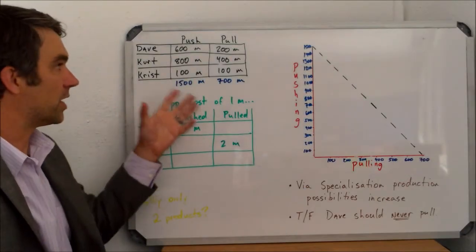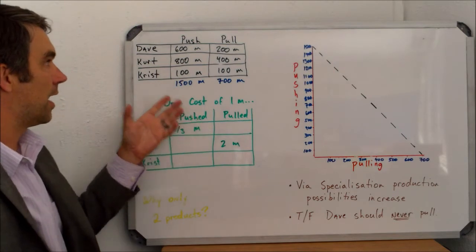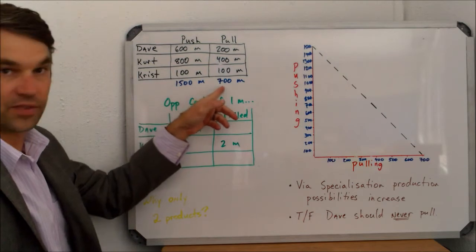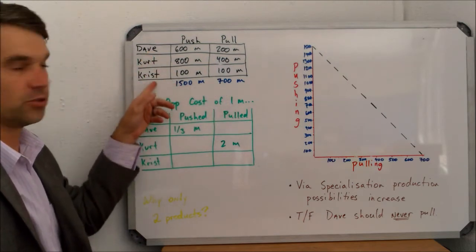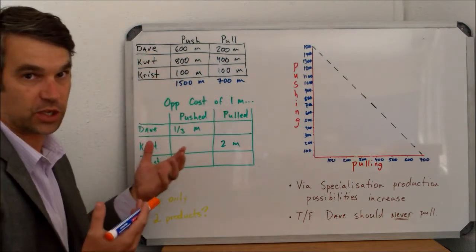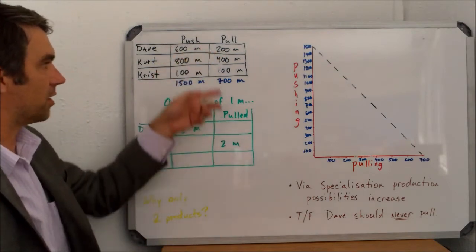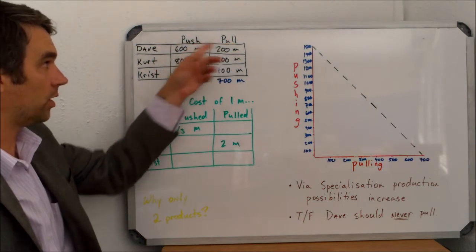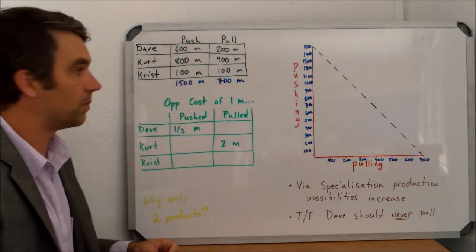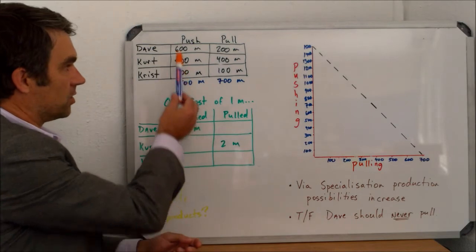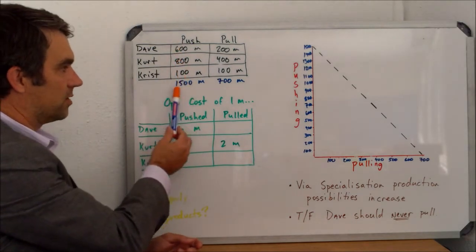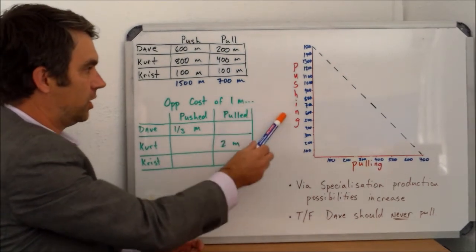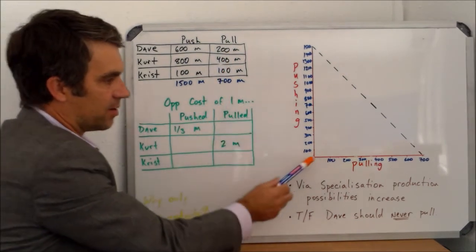We can take this thinking to the production possibilities curve. Now instead of just looking at the total — instead of saying you can produce 1,500 or 700 — we need to look at individuals within that and see how they're specialized for different purposes. Our two examples here are pushing something up a meter or pulling at a meter. Here's what the various people can do: we've taken the totals — 6, 8, and 100 meters — added them up, and that's the top of our y-axis, 1,500 meters push. These add up to 700 meters pull.